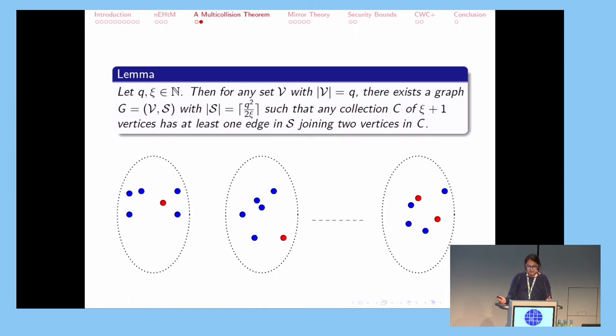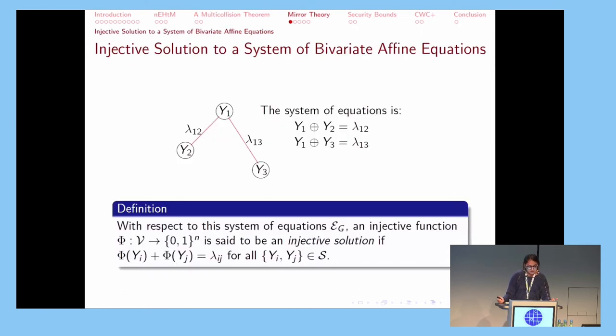The proof is quite simple. We divide all the q vertices into ξ sub-collections of ceiling of q by ξ vertices each. The last collection may contain fewer vertices. We add edges such that each collection becomes a clique, and no two vertices in different cliques share any edge. So if we choose one vertex out of each collection, then we have chosen a total of ξ vertices. Since we want to choose ξ+1 vertices, by the pigeonhole principle, we definitely have at least one pair of vertices that share an edge. That's how we prove this lemma.